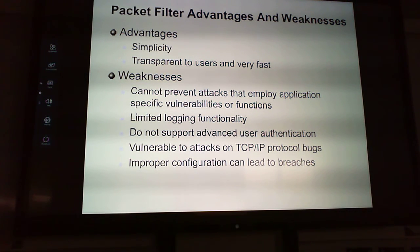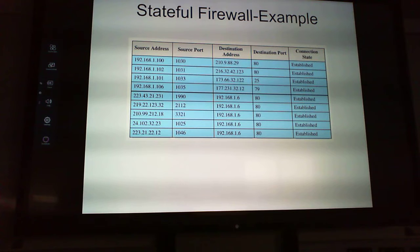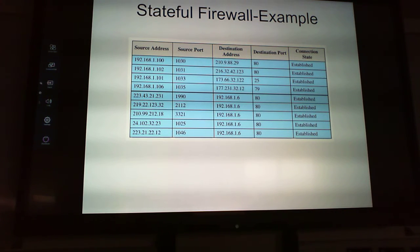A stateful firewall example matrix includes source addresses, source port, destination address, destination port, and whether or not the connection state has been established.